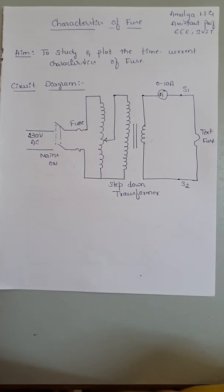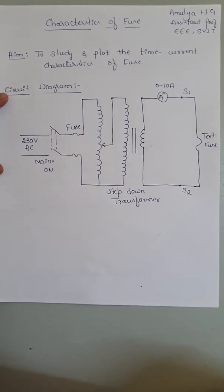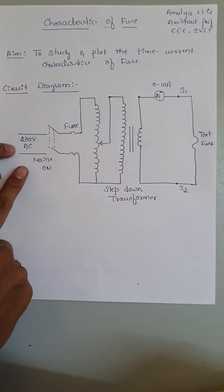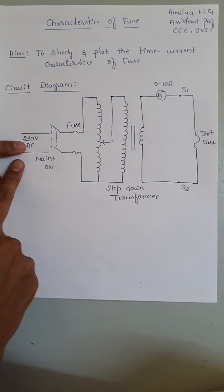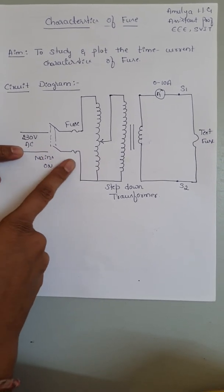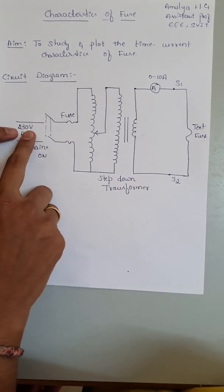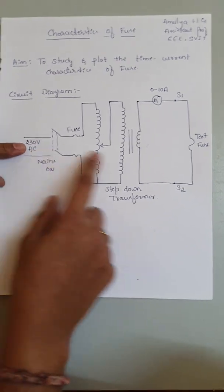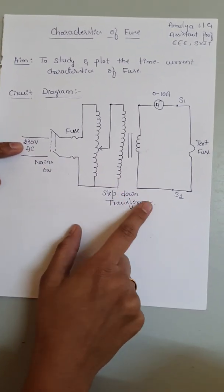This is the circuit diagram for the fuse experiment. From the input, we receive a supply of 230 volts single-phase AC, which goes into the fuse circuit. The 230-volt single-phase supply is reduced to a lower voltage using a step-down transformer.